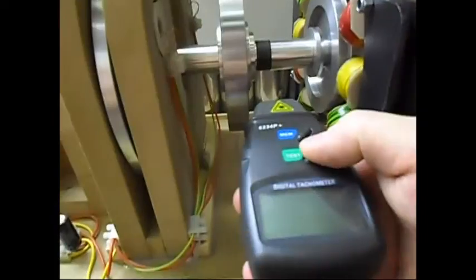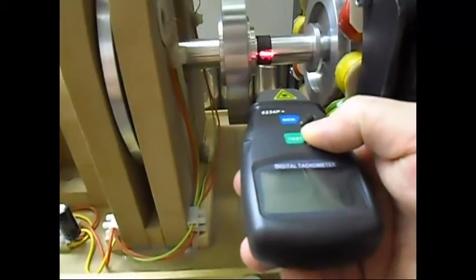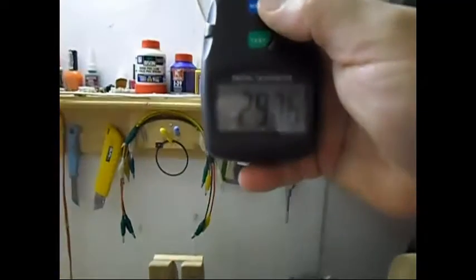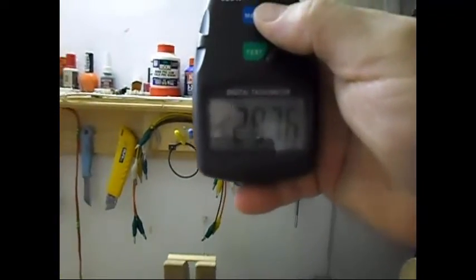Let's see what the RPM is now. Yeah, it's about right, 2,967. So connecting the load without the capacitor, it is being bypassed, shorted out... not shorted out, bypassed. Here we go.